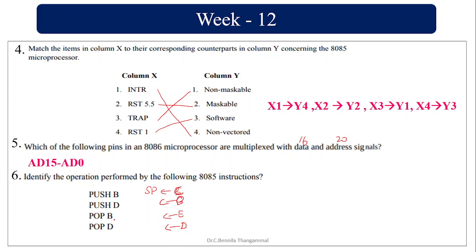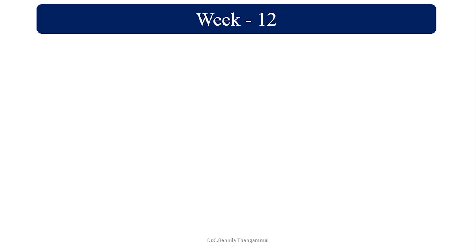Now pop B. Whatever content is in D will be popped into C register, and E to B register. Pop D now. The content of B will be popped to D register and C to E register. So what happens? The content of BC register pair is exchanged with DE register pair.